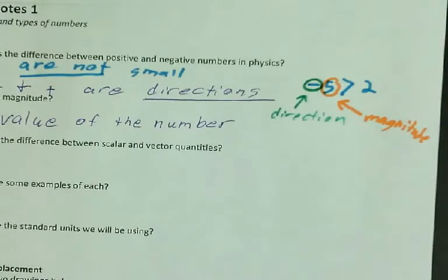That's also why negative 100 is bigger than negative 50. The magnitude, the value of 100 is bigger than the value of 50. And the direction is just the direction. It does not affect the number itself.